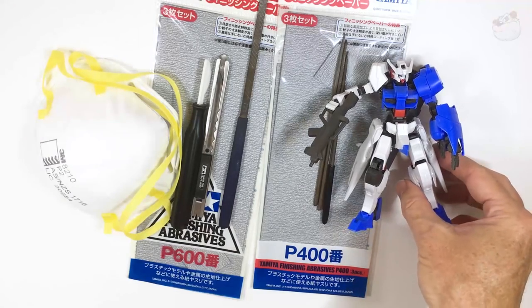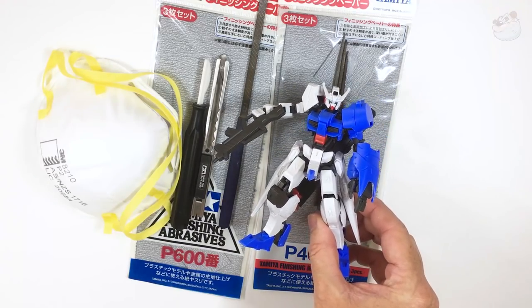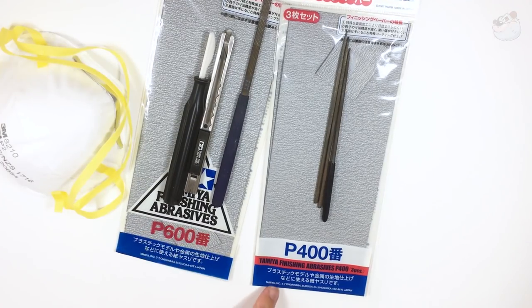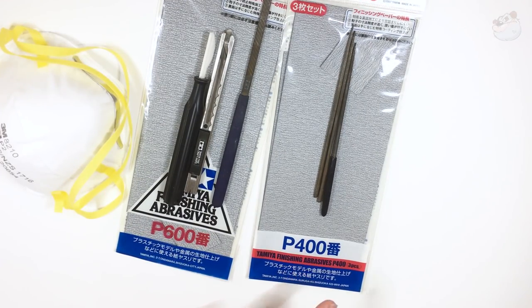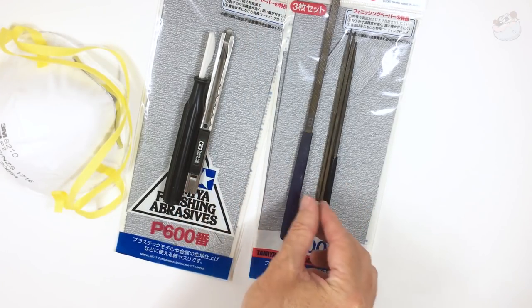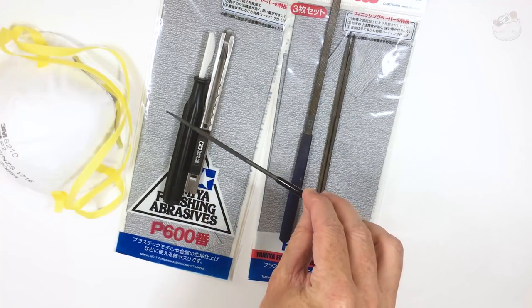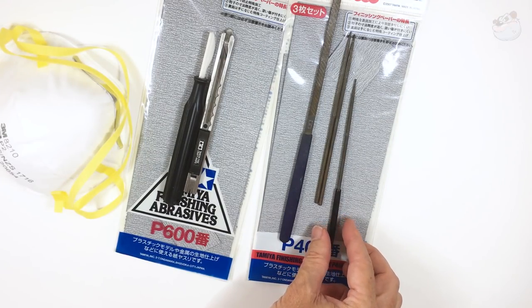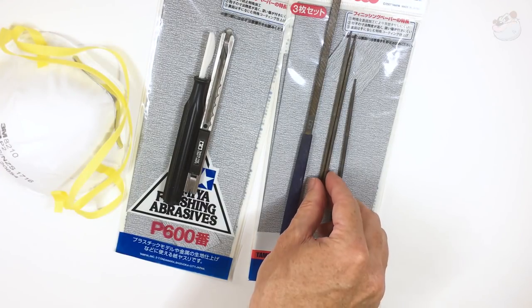Today I'd like to run through with you some of the simple tools and the processes I use to clean up a Gunpla before paint. So I've shown you I've got a little HG Astaroth. I can't show you construction this time because my lovely wife put this one together for me. When I was preparing for GBWC 2017 down in Sydney I made the Grimgerde and my wife made this one for me.